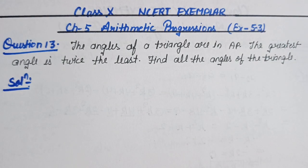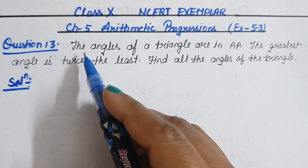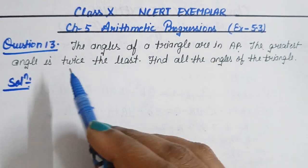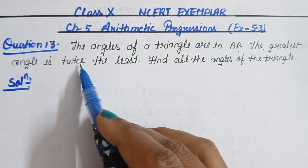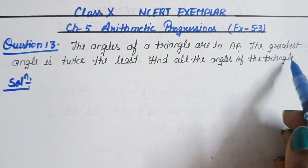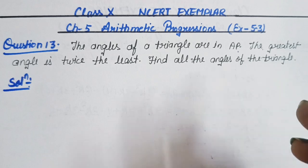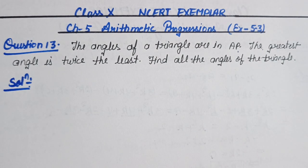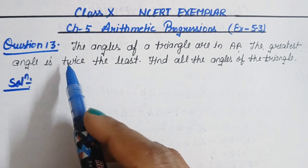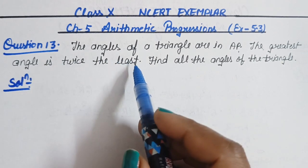Let's see what is given in Question 13. The angles of a triangle are in AP. The greatest angle is twice the least. Find all the angles of the triangle.